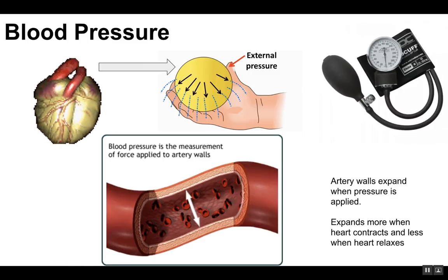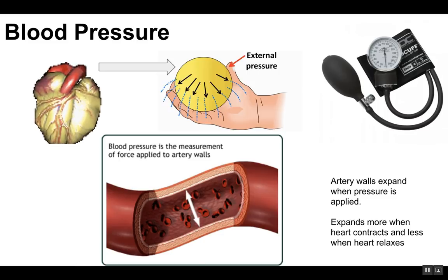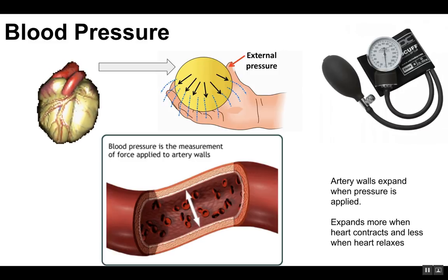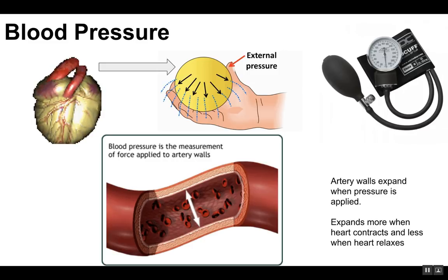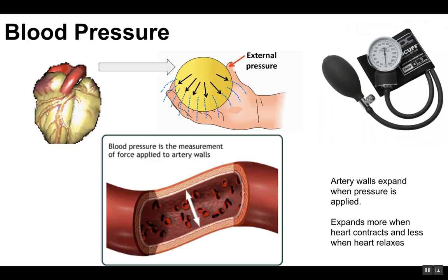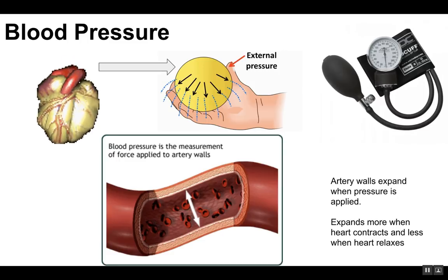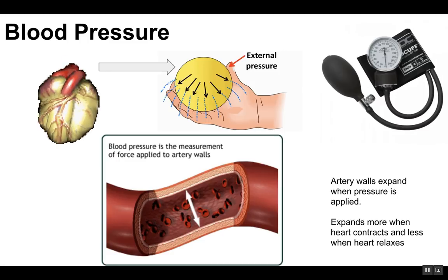There are two types of blood pressure. Systolic pressure is the force felt in the arteries when the ventricles contract — when the ventricle is pushing blood out. Diastolic pressure is the force felt in the arteries when the ventricles relax and allow blood in. A typical blood pressure reading is 120 over 80: the higher number is your systolic pressure and the lower number is your diastolic pressure.